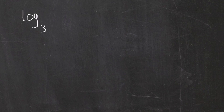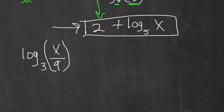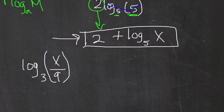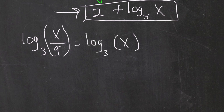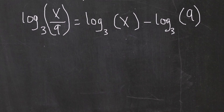For the second example, we have log base 3 of x over 9. Since we have a quotient of two terms, we use the quotient property — division relates to subtraction — so we express this as a difference of logarithms: log base 3 of x minus log base 3 of 9.